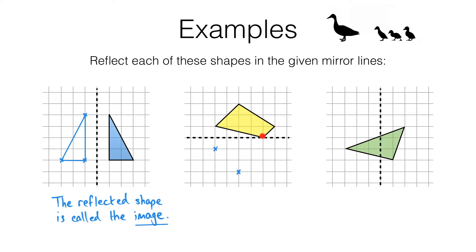The third corner is on the mirror line — it's touching the mirror. That means the distance is zero, so its reflection is also going to be a distance of zero from the mirror line. In other words, that point is going to be reflected in exactly the same place, so we mark it right there. The fourth corner is one square above the mirror line, so it's going to get reflected one square below right here. And again, we need to join these up using a ruler.